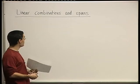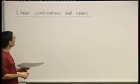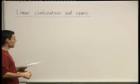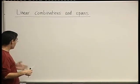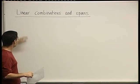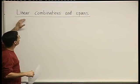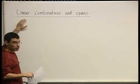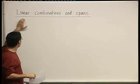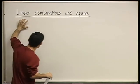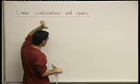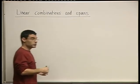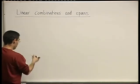We want to discuss two more notions which relate to vectors, to vector spaces, and to subspaces. The notions are: what is a linear combination and what is a span. Let's start with the first one.